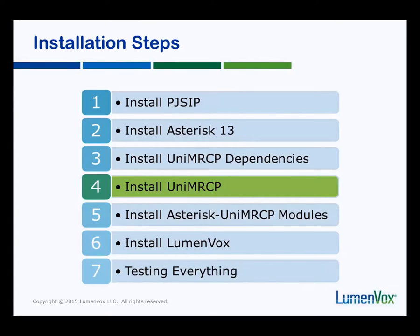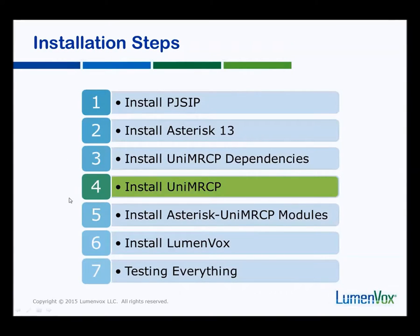Some of the naming conventions here are not helping with the confusion. But this is the sequence that needs to be followed and there are three distinct steps that need to be done in this order. We have the dependencies for the library, we have the library itself, and then we have the modules that plug into Asterisk that talk to this library.